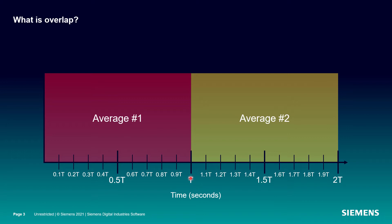Here I show two averages. Average one obviously takes T seconds. Average two gets me out from T to 2T. So if I start average two the moment average one ends, we would call this 0% overlap.